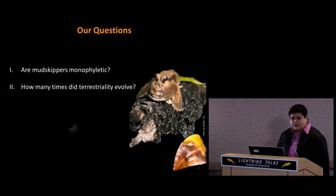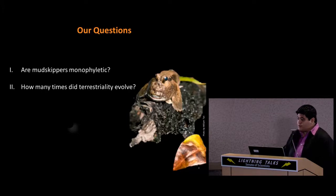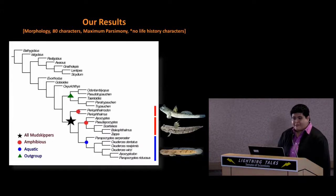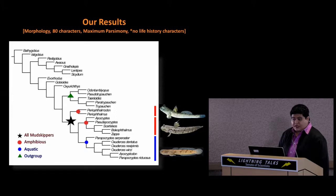In light of these inconsistencies in the literature, Lynn Parenti and I set out to ask two questions: are mudskippers monophyletic, and how many times did terrestriality evolve within this group? We examined 48 species of gobies, 25 of which are mudskippers, omitting all life history characters and concentrating on 80 morphological characters.